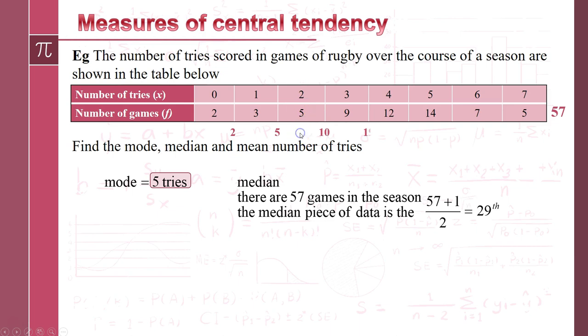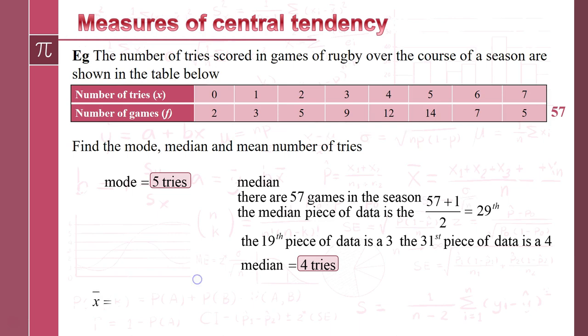And then if I include all of these ones, that's going to take me up to the 31st piece of data. So that means the 29th piece of data has got to be a four. So what we're saying is the 19th piece of data is a three, the 31st piece of data is a four, and as I said before that means the median has got to be a four.